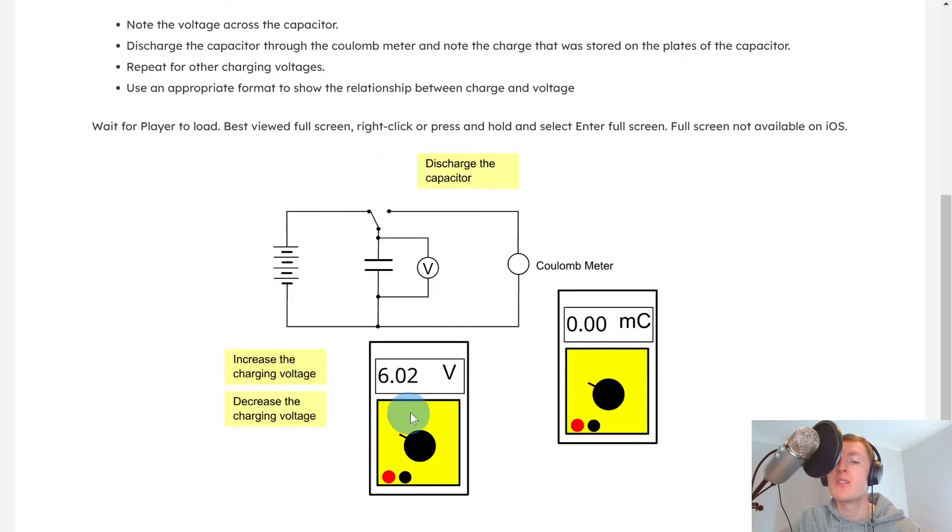We could then charge it again, increase the voltage to 6.02 volts and discharge, giving us 30.2 millicoulombs. We could then increase the charging voltage again to get 7.53 volts and then discharge through the capacitor and we get 37.7 millicoulombs. And then the last one, increasing the charging voltage to 9.05 volts, we could then discharge through the capacitor and write down our 45.4 millicoulombs.